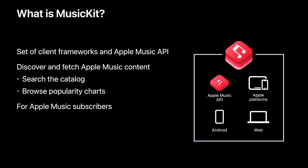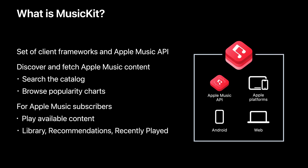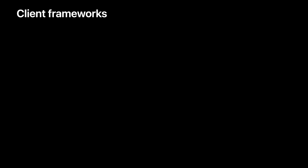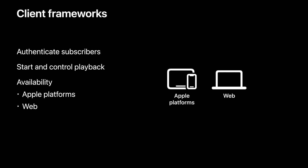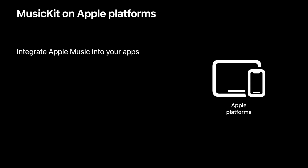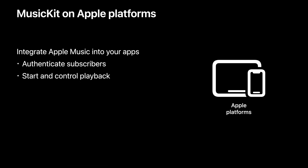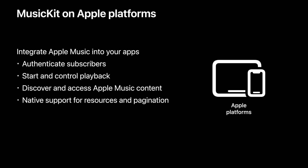With the user's consent, MusicKit and Apple Music API let you authenticate subscribers to play available content and provide access to personalized features, including their music library, recommendations, and recently played history. MusicKit client frameworks provide the APIs needed to authenticate subscribers and start and control playback on a device. Client frameworks are available for apps on Apple platforms, web applications using JavaScript, and Android applications using the available SDK. MusicKit on Apple platforms has everything you need to integrate Apple Music into your apps. Subscribers can authenticate or sign up within your app to start and control playback and access other personalized features. Available APIs accelerate calls to discover and access content from Apple Music with native support for resources and pagination. Many of the topics covered later about accessing and making requests to Apple Music API directly are handled by MusicKit on Apple platforms automatically.